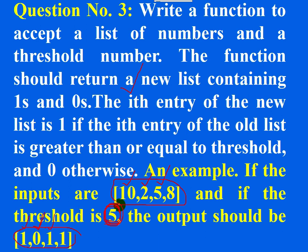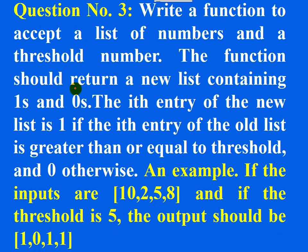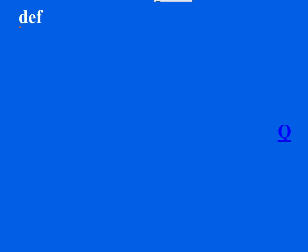After creating the new list, do we need to display the answer or return it? The question says the function should return a new list, so after calculating the answer it should be returned, not displayed.